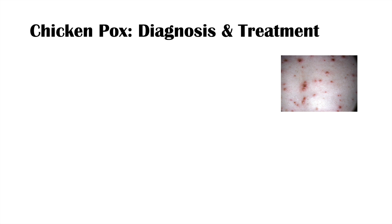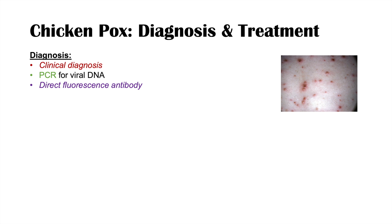The diagnosis of chickenpox is often a clinical diagnosis — we see children exposed to others with similar vesicles in different stages of healing. Other diagnostic methods include polymerase chain reaction (PCR) to detect viral DNA, direct fluorescence antibody testing, and serologies to assess for immunity, such as detecting immunoglobulin G against varicella zoster virus, which can indicate prior exposure or vaccination.